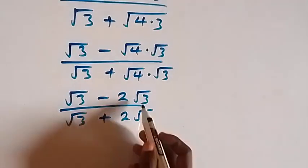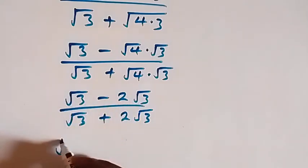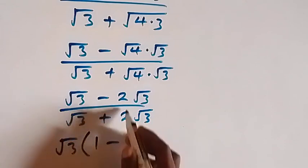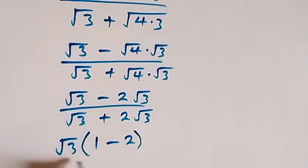Then we have √3 common here, we can factor it out. That's √3 into brackets, what's left here is 1, then what's left here is minus 2.